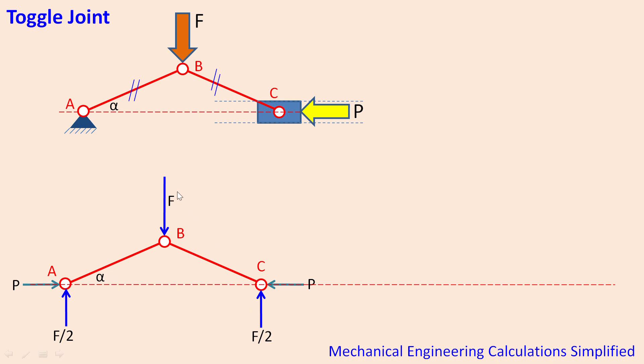So thus creating an equilibrium in vertical direction and the horizontal force, that resistance, the resistance needed or the load needed to be pushed here, P, will create a horizontal reaction at point A. It cannot create a reaction at point B because it will not be supported anywhere.